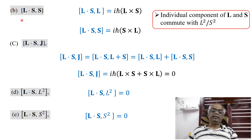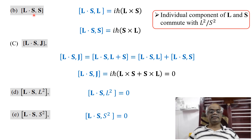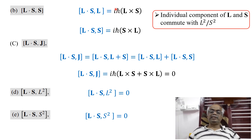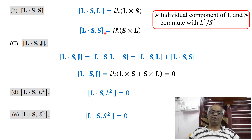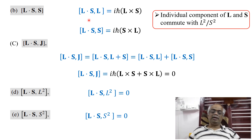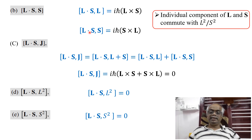The next relation is the commutation of L·S with S. Earlier we found that [L·S, L] = iℏ(L×S). Here L is replaced by S, so using the same method we can find that [L·S, S] = iℏ(S×L). Note that in Part A it was L×S, and here it is S×L.